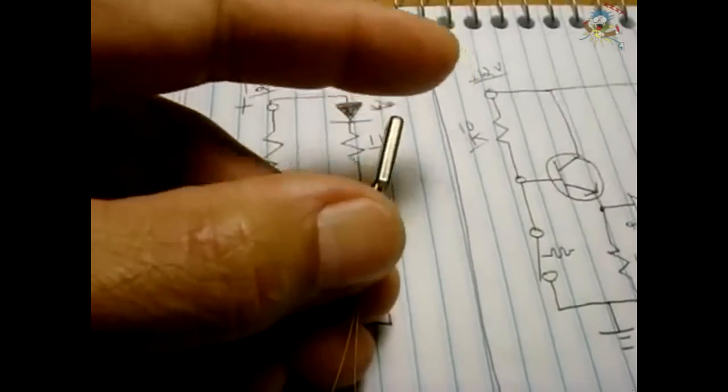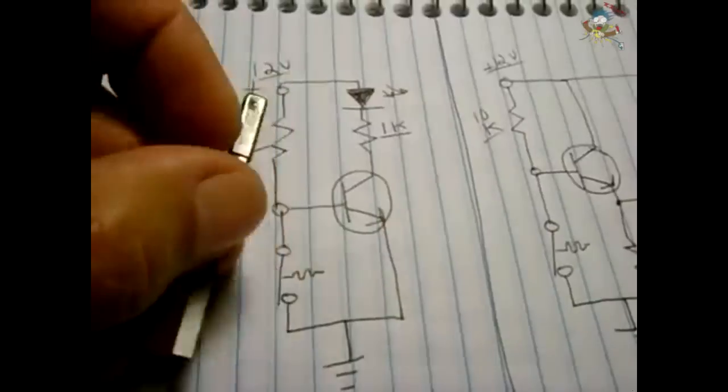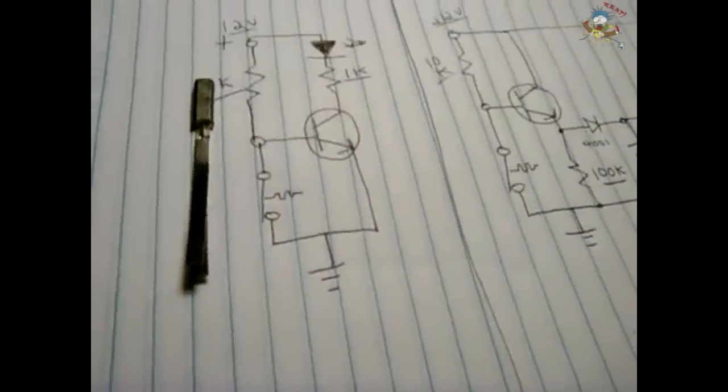These bimetallic strips have a slight curve already in the opposite direction of which the switch will trigger. What causes the switch to trigger is when heat is applied to the bimetallic strip, each metal will react differently to expansion and contraction based on temperature. So as heat is applied to the strip, one side will expand more than the other causing the bimetallic strip to bow in the opposite direction.